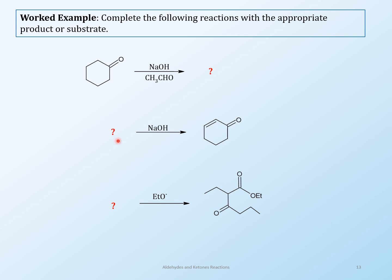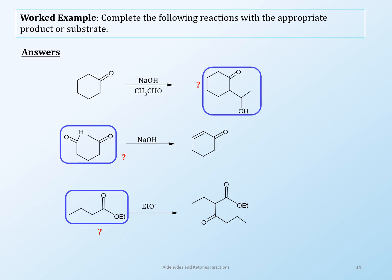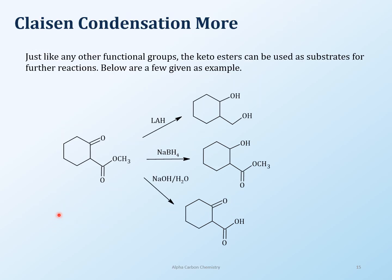Here are some worked examples covering aldol, cyclizations, and esters — try them out, and as usual I do have the answers, but make sure you do them on your own. The interesting thing about Claisen reactions is you can do so much more once you have the ketone and ester products. The question about why you should use LDA and not sodium hydroxide — the answer is on this slide, if you can find it.